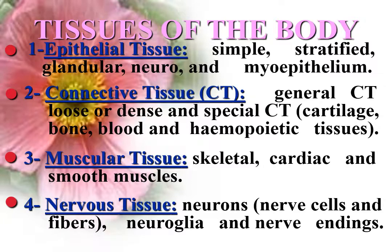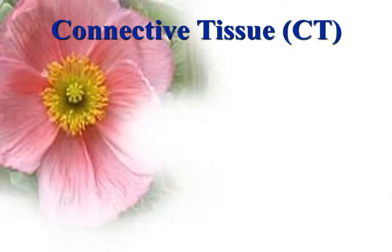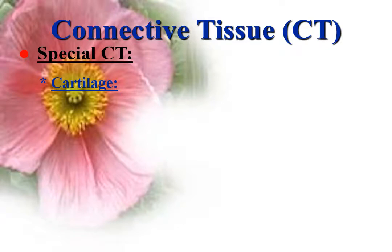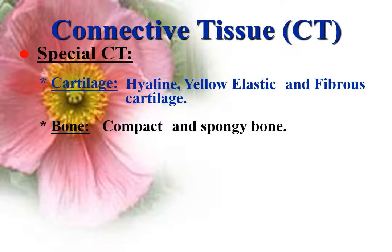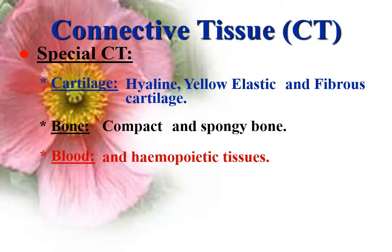Nervous tissue also includes supporting cells called neuroglial cells and nerve endings. Connective tissue is formed of cells, fibers, and matrix, and can be classified according to the nature of the matrix into general and special connective tissue. Special connective tissue includes cartilage with rigid matrix, bone with calcified matrix, blood with fluid matrix, and hemopoietic tissues.